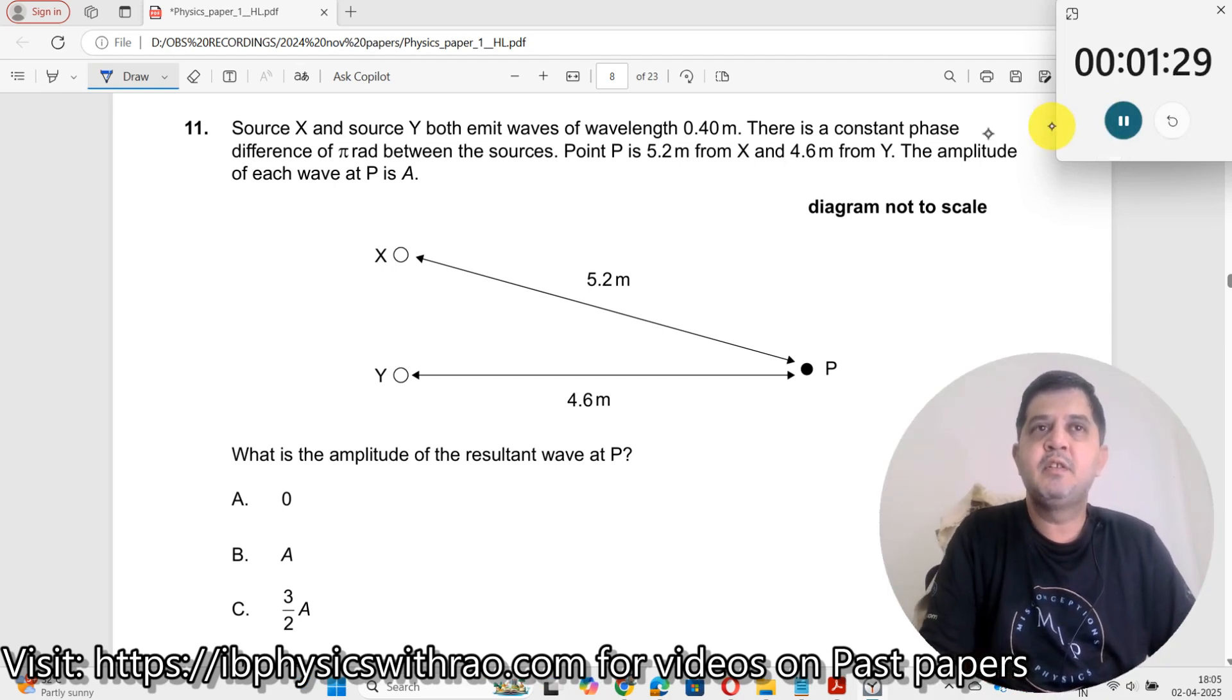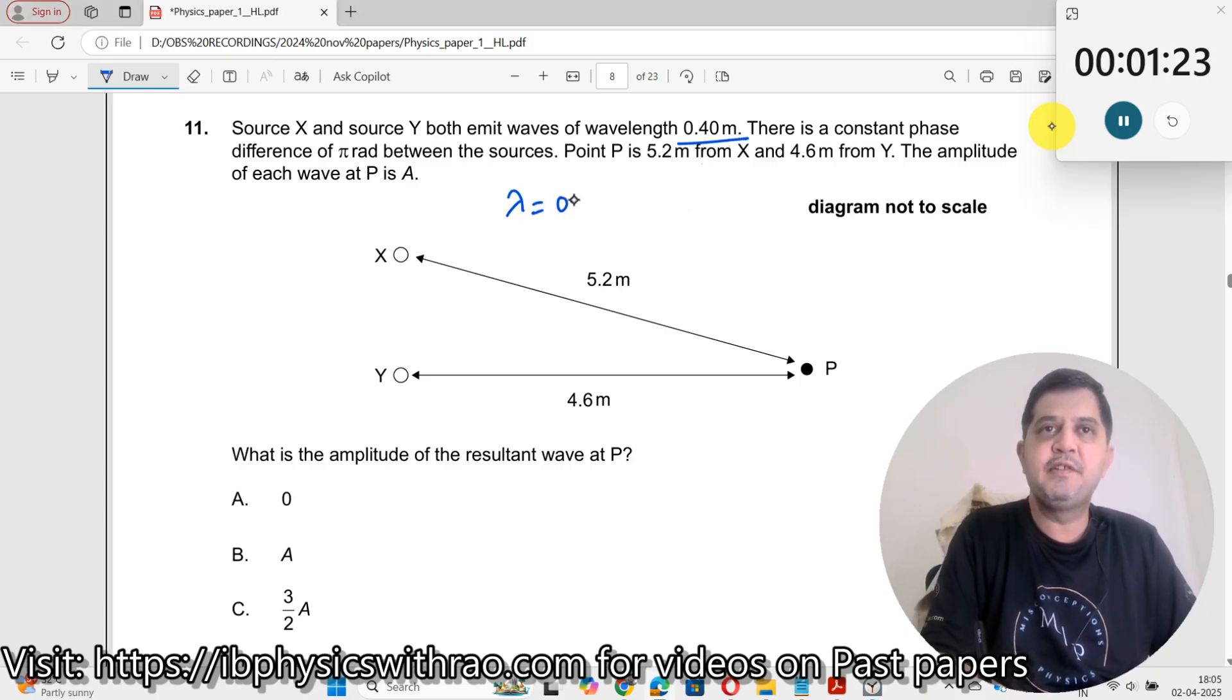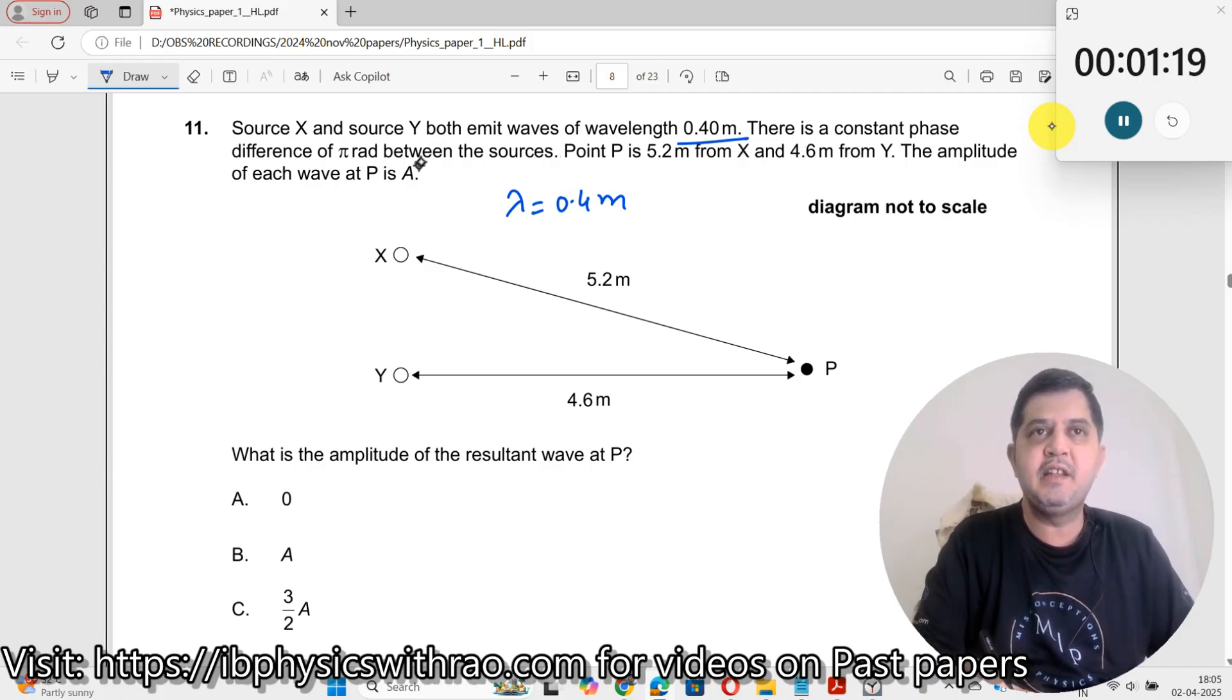Question number 11: Source X and Y both emit waves of wavelength 0.4 meters. Lambda is given to be 0.4. There is a constant phase difference of π radians between the sources.